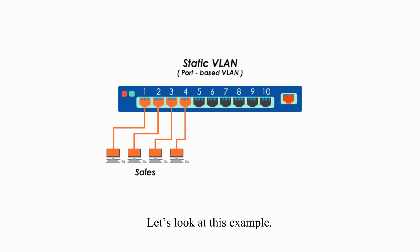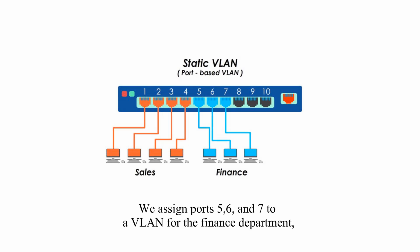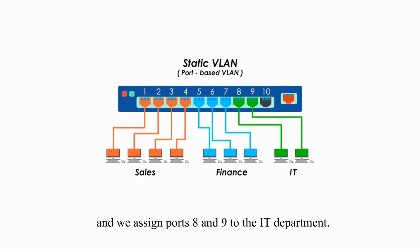Let's look at this example. We assign ports 1, 2, 3, and 4 to a VLAN for the sales department. We assign ports 5, 6, and 7 to a VLAN for the finance department. And we assign ports 8 and 9 to the IT department.